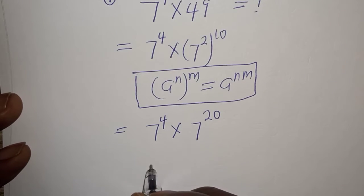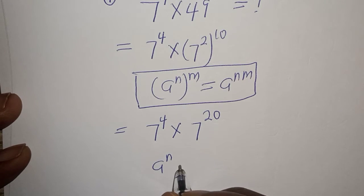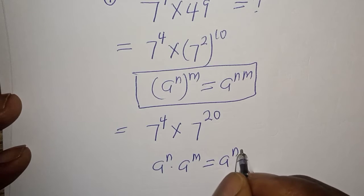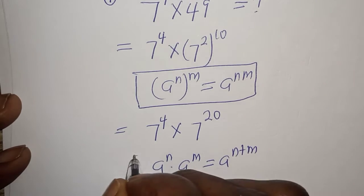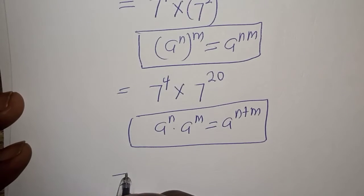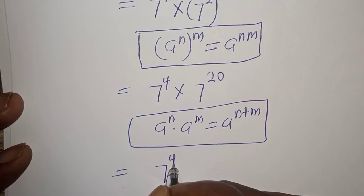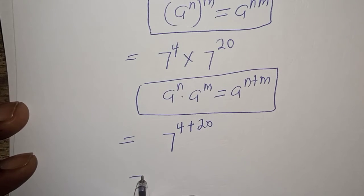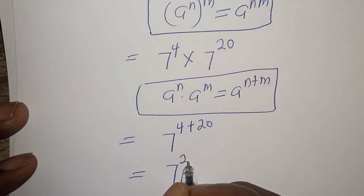And if you have a raised to power n multiplied by a raised to power m, this is equal to a raised to power n plus m. So this can be written as 7 raised to power 4 plus 20 equal to 7 raised to power 24.